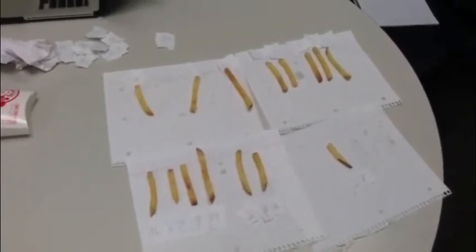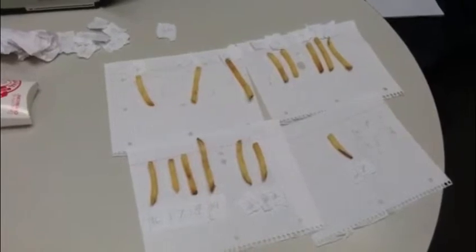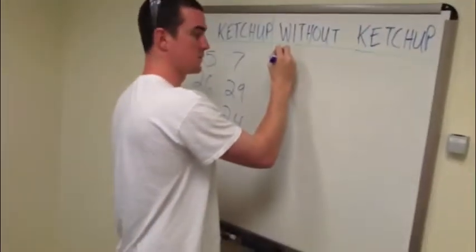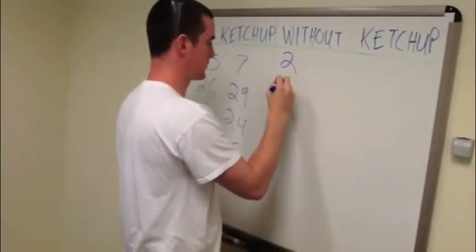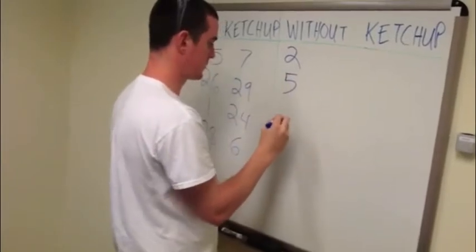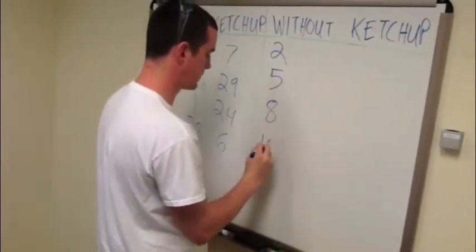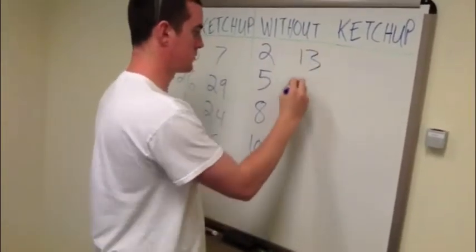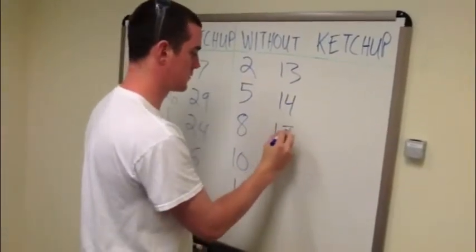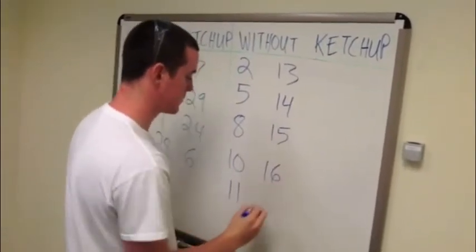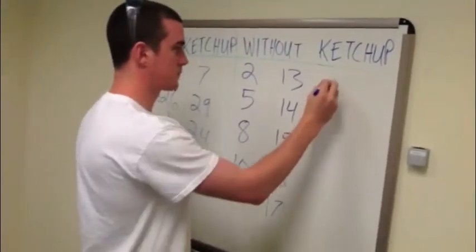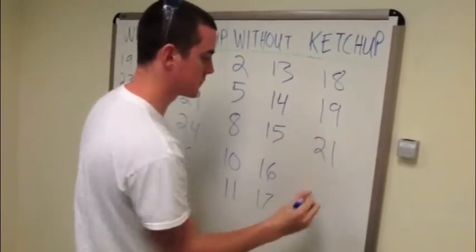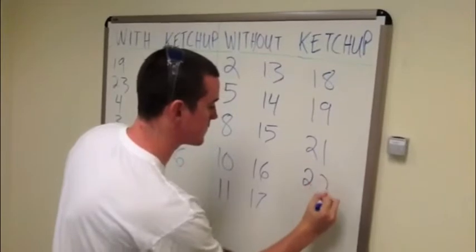Here are the remaining french fries after using the random number generator that we're going to eat without ketchup: 2, 5, 8, 10, 11, 13, 14, 15, 16, 17, 18, 19, 20, 21, 22, and 27.